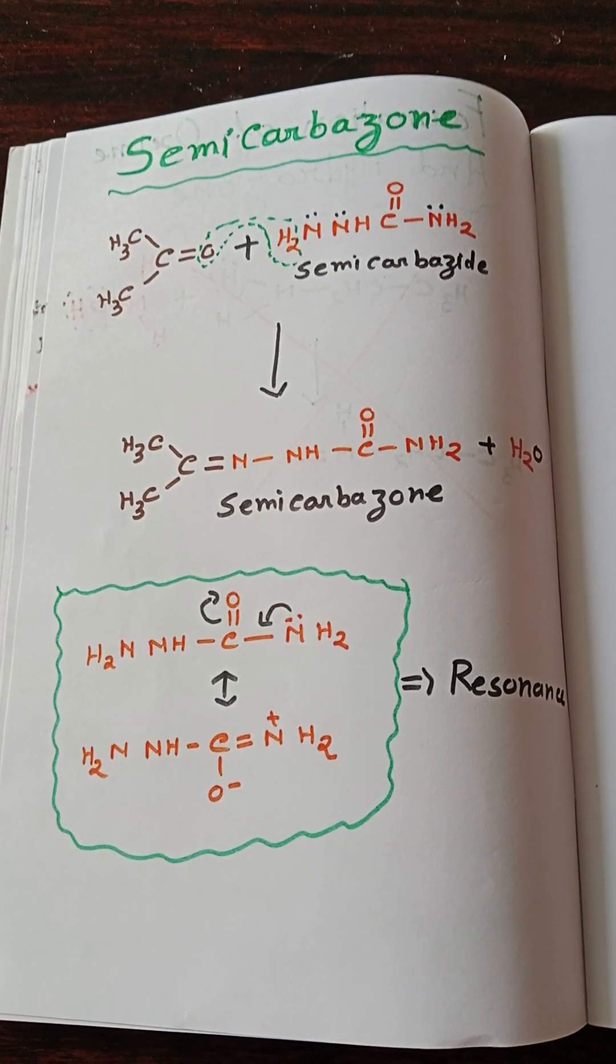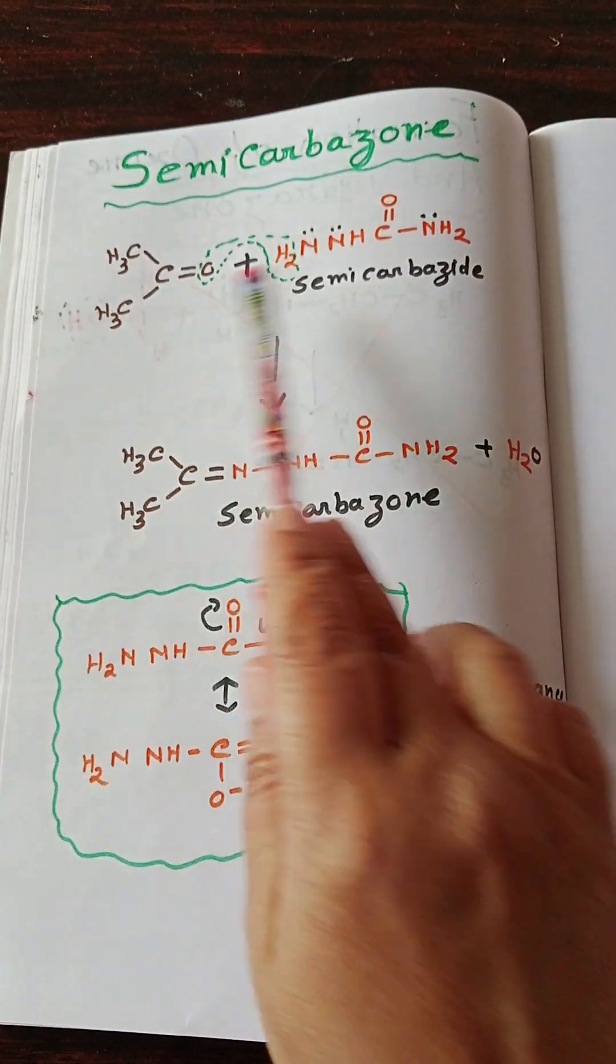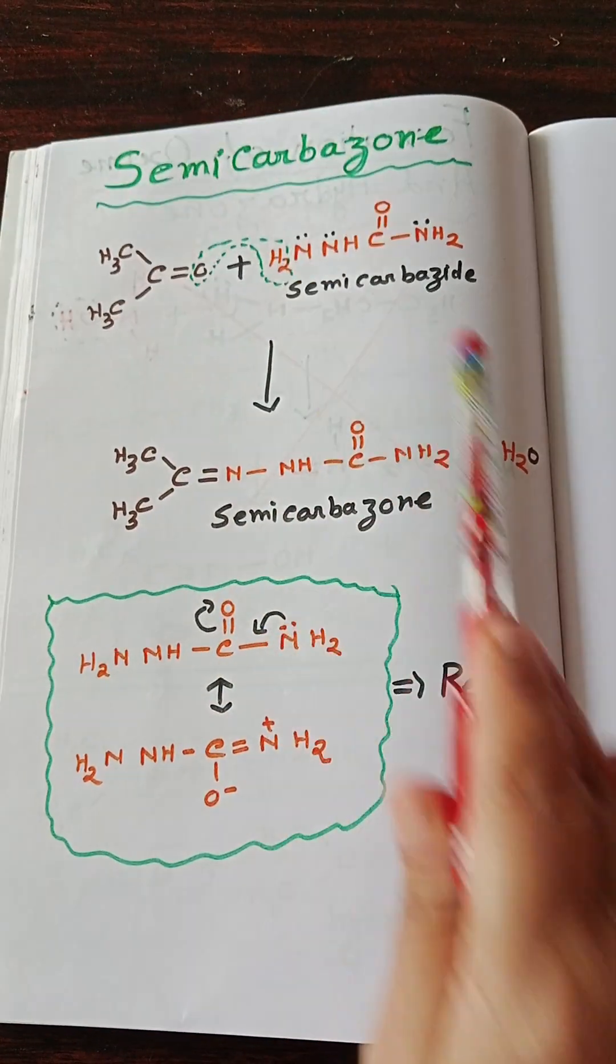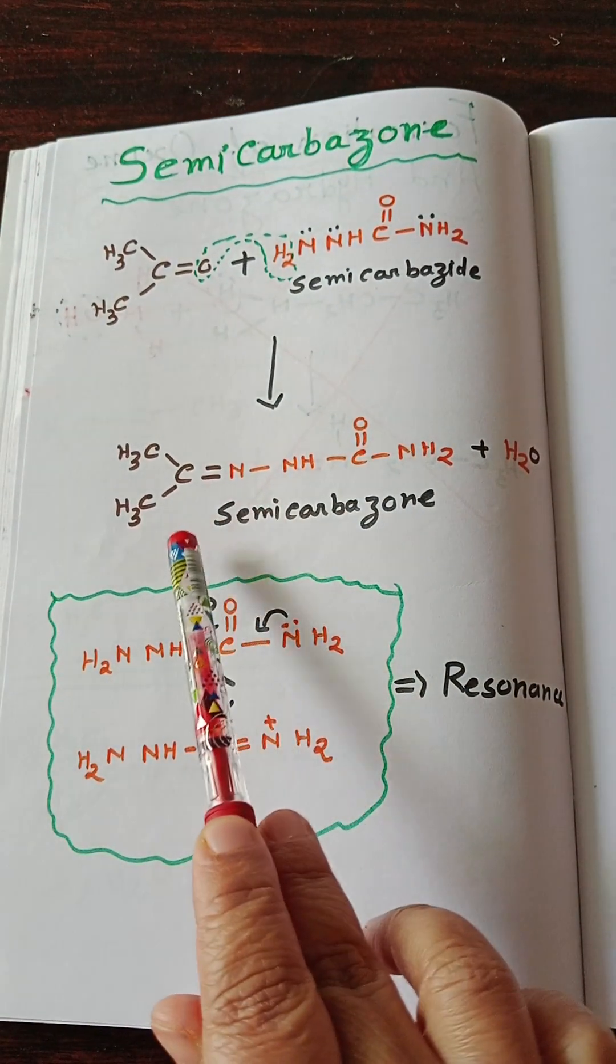Synthesis of semicarbazone is a characteristic reaction of carbonyl compounds. Here we have taken acetone and semicarbazide. The oxygen and H2O leave as a water molecule, and carbon and nitrogen bond via a double bond to get the final compound semicarbazone.